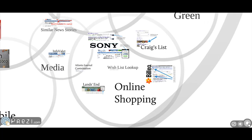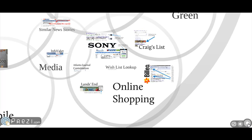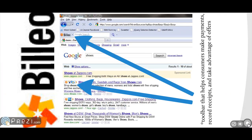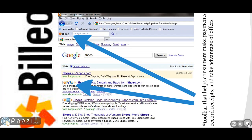81% of users research or buy products online. That means there are 1.4 billion shoppers who could benefit from Kinetics context-aware apps. Bilio offers users a toolbar that helps consumers make payments, record receipts, and take advantage of offers.